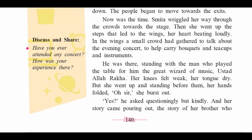Now was the time. Smita wriggled her way through the crowds towards the stage. Then she went up the steps that lay to the wings. Wings means areas of the stage deck where the audience cannot see — where performers get prepared, change, and make their entry. In the wings, a small crowd had gathered to talk about the evening concert, to help carry bouquets and teacups and instruments.